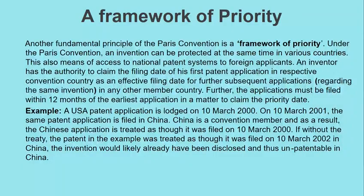The second fundamental principle of the Paris Convention is the Framework of Priority. Under this principle, an invention can be protected at the same time in various countries, allowing foreign applicants access to national patent systems. For example, a US patent application filed on March 10th, 2000 — if the same application is filed in China on March 10th, 2001, and China is a convention member, the Chinese application is treated as though it was filed on March 10th, 2000. Without the treaty, the invention would likely already have been disclosed and thus unpatentable in China.